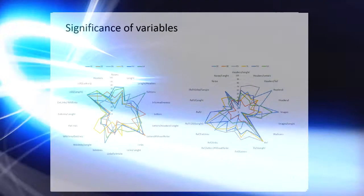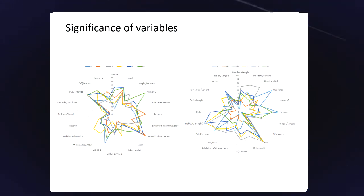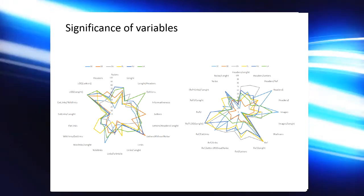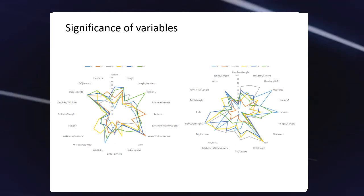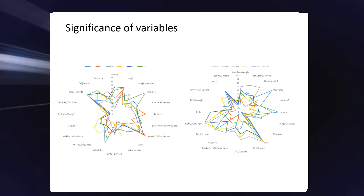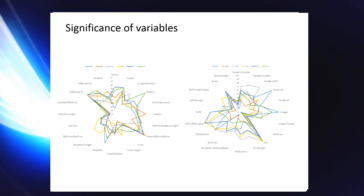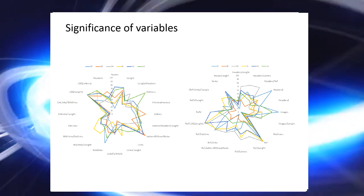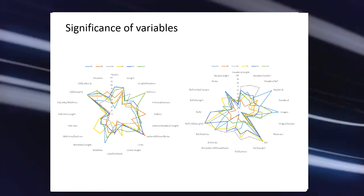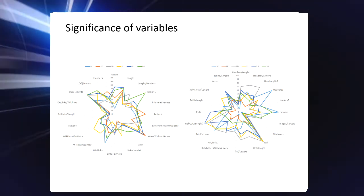For the models we built, the significance of variables has also been calculated. Attributes along with their significance form a specific profile of a language — one attribute is important for one language, another better characterizes quality in another language. It is then possible to compare various languages, as presented in the figures. The profiles indicate that in each language, various features have different significance.